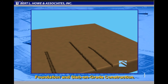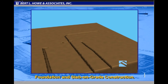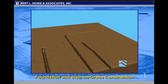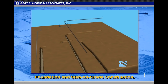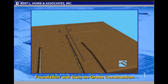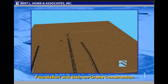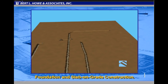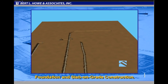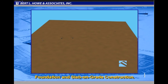First, trenches are excavated for any underground utilities including plumbing, electrical, gas, and cable TV. Once these utilities are in place, the trenches are filled in, or backfilled, first with a layer of sand and the remainder with soil.